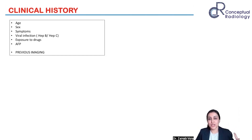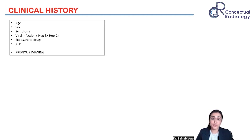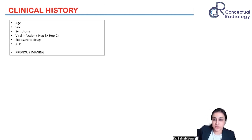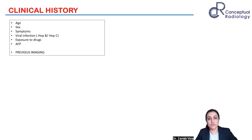When AFP is positive, I start thinking on the lines of hepatocellular carcinoma. Very important is previous imaging — if the patient has had a prior MRI or CT, you must take it for comparison. You have to mention this in your report, because in LiRADS, increase in size is one of the important criteria, so previous imaging becomes very critical.